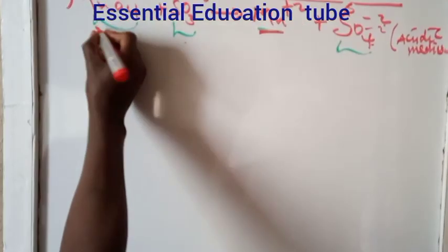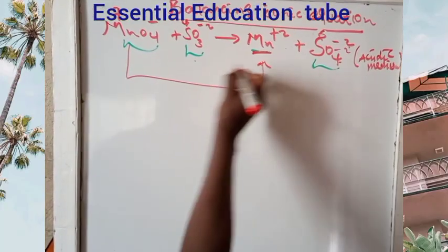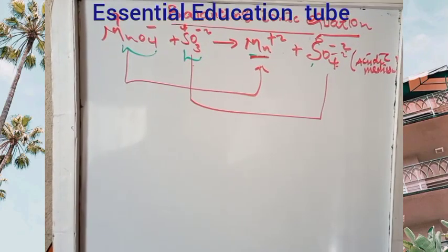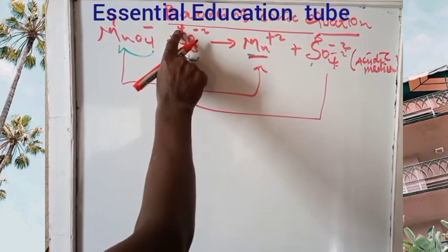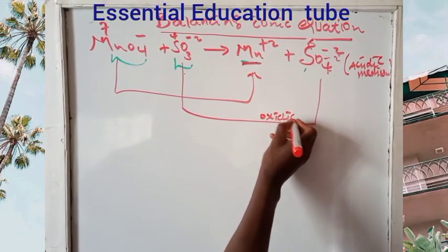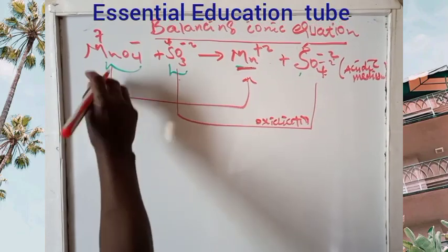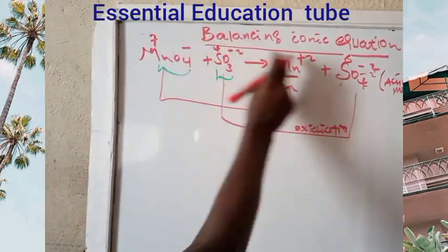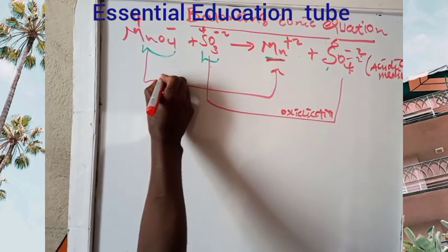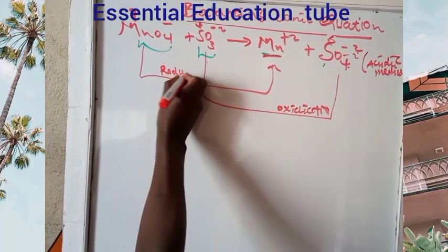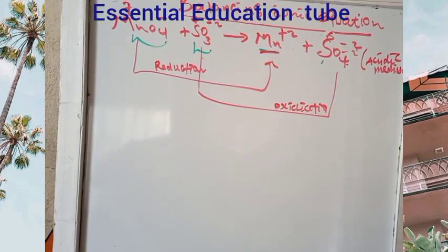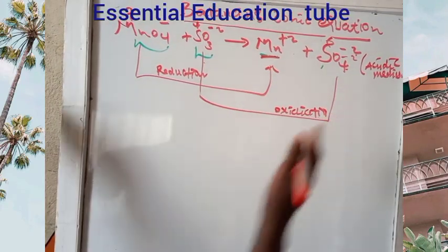Permanganate ion changes to manganese +2, and sulfide ion changes to sulfate. Sulfur's oxidation number is increasing — that is oxidation. Permanganate goes from +7 to +2 — that is the reduction half-reaction.